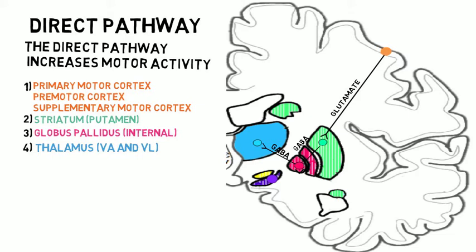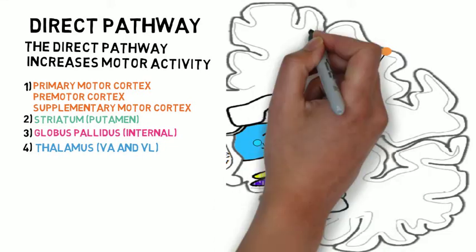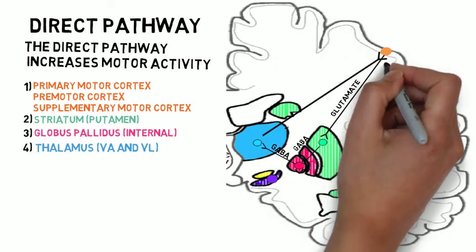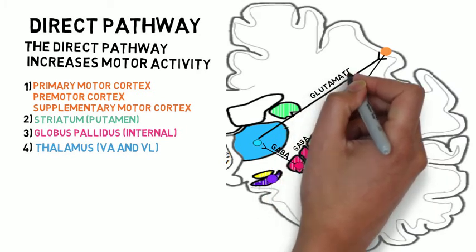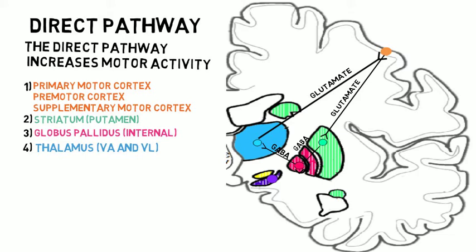Neurons in the thalamus synapse with neurons in the cortex and use glutamate as a neurotransmitter. Since the neurons in the thalamus receive less inhibition, they will increase the amount of glutamate released at the motor cortex, thus increasing motor activity. So the end result of the direct pathway is increased firing of the motor cortex.